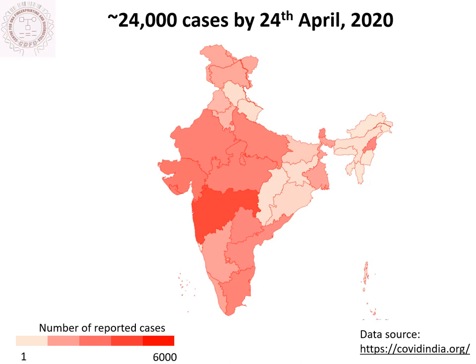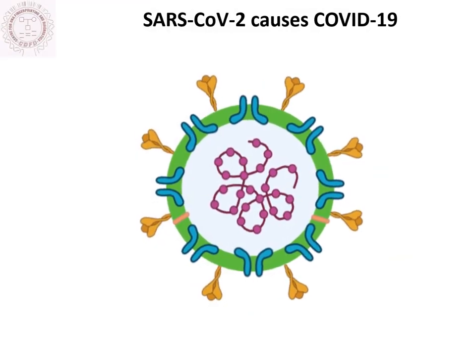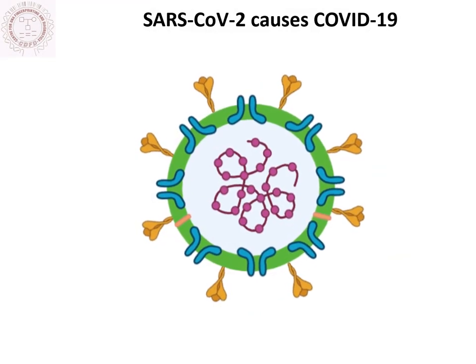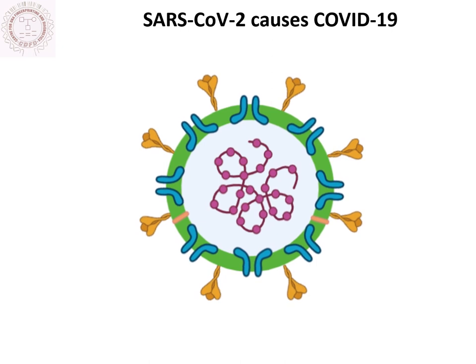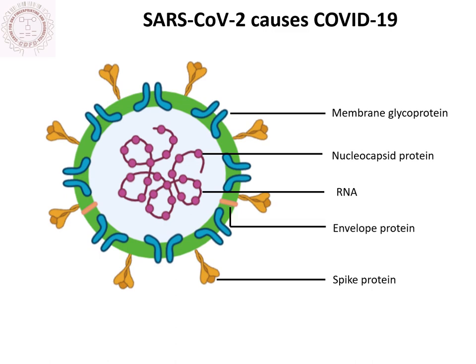Tools of molecular biology and genomics have identified SARS-CoV-2 as the causal pathogen. It contains membrane glycoprotein, nucleocapsid protein, single positive-stranded RNA consisting of nearly 30,000 nucleotides, envelope proteins, and spike proteins.